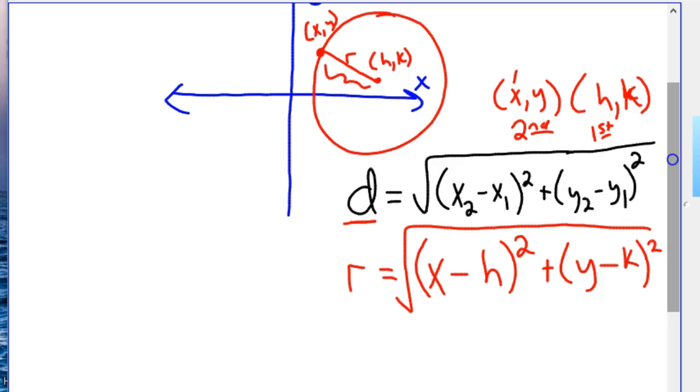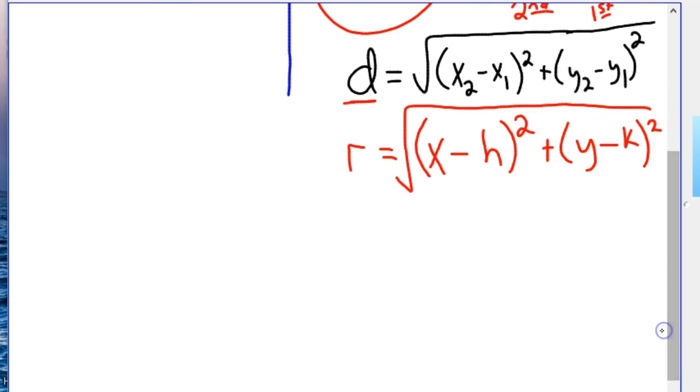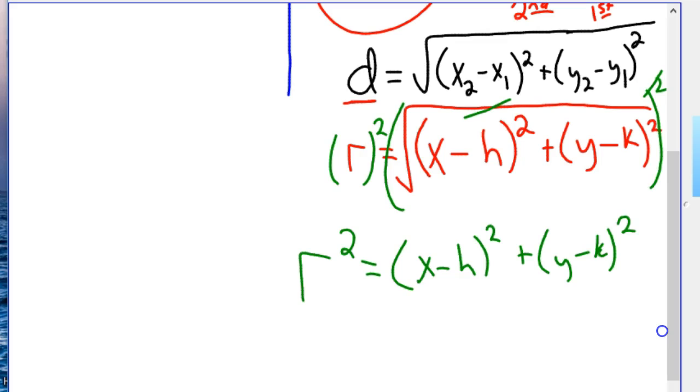And again, I've taken x2 minus x1, y2 minus y1, and plugging it in. And then just to continue this on, we want to square both sides of the equation so that we get rid of the radical. So we'll square this and square this. And what happens is the square and the square root cross out. And you're left with r squared equals the quantity of x minus h squared plus y minus k squared. Or you flip that around. x minus h squared plus y minus k squared equals r squared.